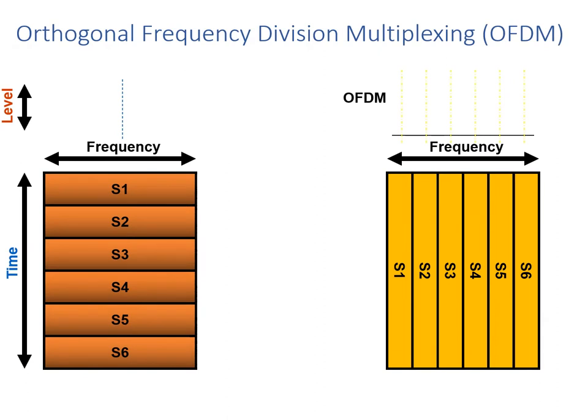One of the key technologies that enables MIMO, as well as LTE or long-term evolution, which is being used in the next generation of cell phone technology, is orthogonal frequency division multiplexing, or OFDM for short, which is a lot easier to say than orthogonal frequency division multiplexing.